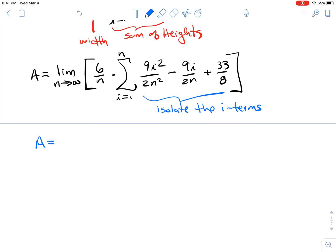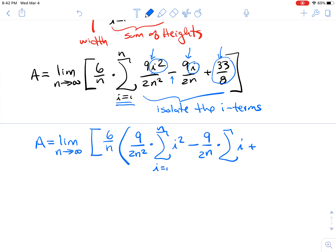So we have the area is equal to the limit as n goes to infinity. 6 over n is my delta x. I'm gonna put a parenthesis here because I'm going to separate this summation into three summations, one for each term. I want to get I squared by itself in the summation so the 9 over 2n squared I will pull out as a constant times the summation of I squared. And then for the next term I'm going to take the minus 9 over 2n as my coefficient times the summation of just the I. And then this one has no I terms it's just a constant so we can just put that inside and use the constant rule for summations.